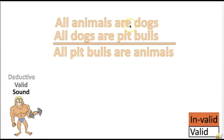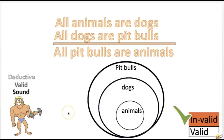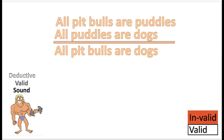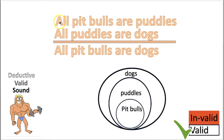Practice problem: 'All animals are dogs. All dogs are pit bulls. Therefore, all pit bulls are animals.' Is this valid or invalid? The answer is invalid. Both premises are false, but if you assume they're true, the animals would have to go inside the pit bulls group — the valid conclusion would be 'all animals are pit bulls.' Next: 'All pit bulls are poodles. All poodles are dogs. Therefore, all pit bulls are dogs.' This one is valid. Though the first premise is false, if you assume pit bulls are poodles and all poodles are dogs, then all pit bulls are in the dogs circle.